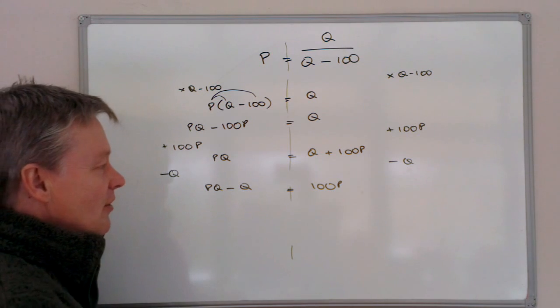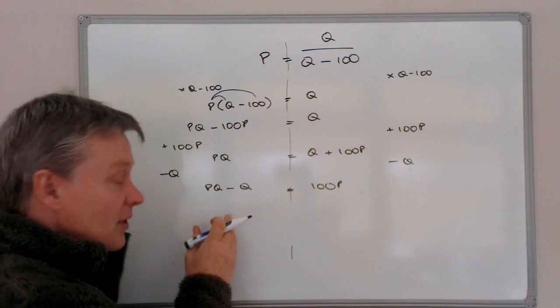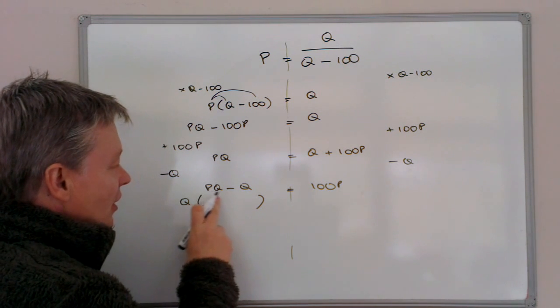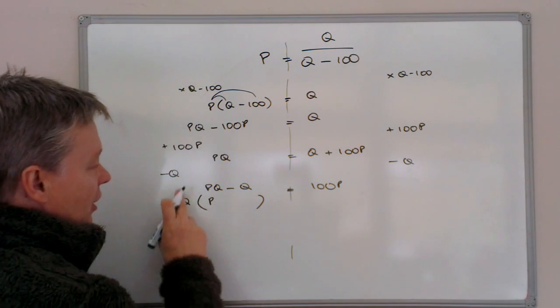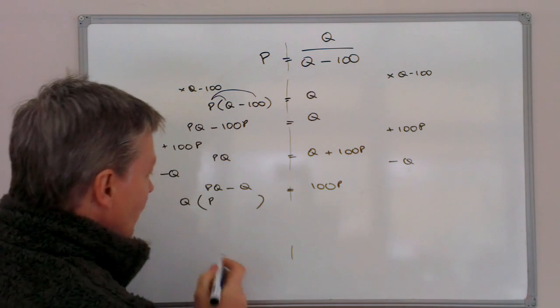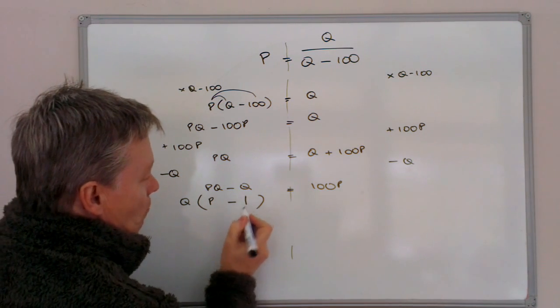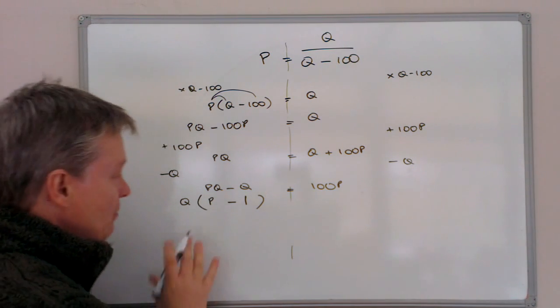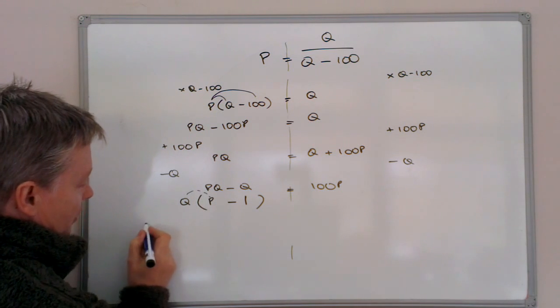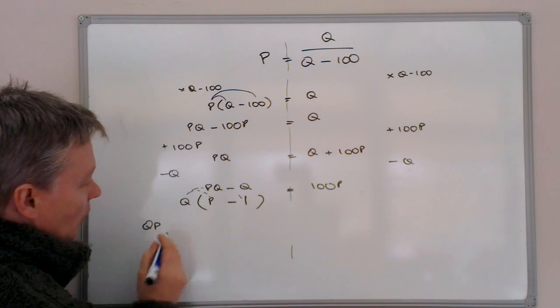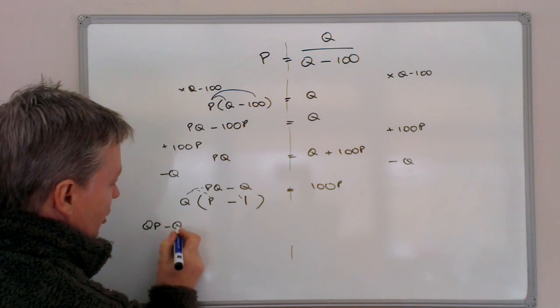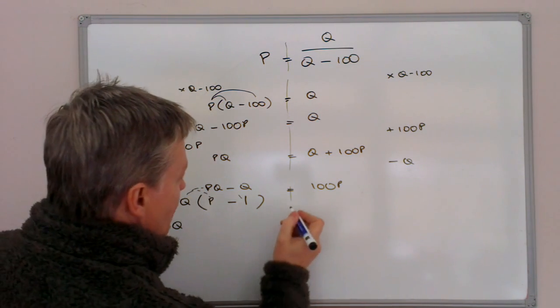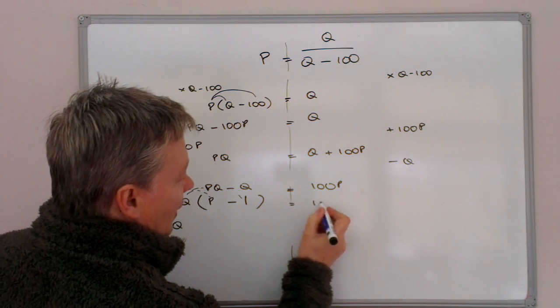So on this side, what I'm going to do is take Q out of these two terms and move it to one side and then multiply something in the brackets. So the first term is PQ, so that's relatively straightforward, because Q times P is PQ. The other term is okay. If I make that minus 1, it means then that if I just try to re-multiply this back again just to check, I've got Q times P, which is QP, and I've got Q times minus 1. Well, minus 1 times Q is minus Q. So that's correct. So this is the factorization of PQ minus Q. On this side, I've still got 100P, so I'm going to leave that as 100P.